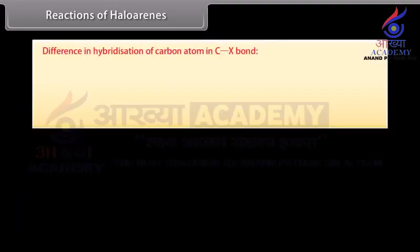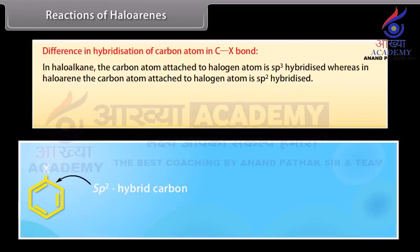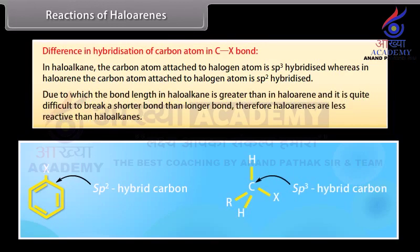Reason 2 — difference in hybridization of the carbon atom in the C–X bond: in haloalkane, the carbon atom attached to the halogen atom is sp3 hybridized, whereas in haloarene, the carbon atom attached to the halogen is sp2 hybridized. Due to this, the bond length in haloalkane is greater than in haloarene, and it is quite difficult to break a shorter bond than a longer bond; therefore, haloarenes are less reactive than haloalkanes.